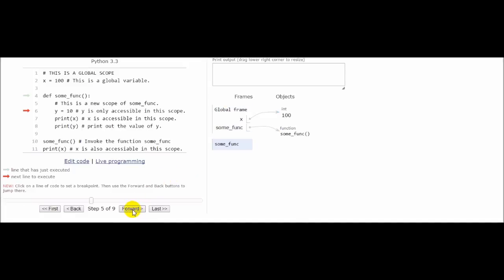On the seventh line, we print out the value of x. Since x is accessible in this scope, it prints out 100 in the output. Similarly, it prints out the value of y in the output because y is of course available in this function scope.